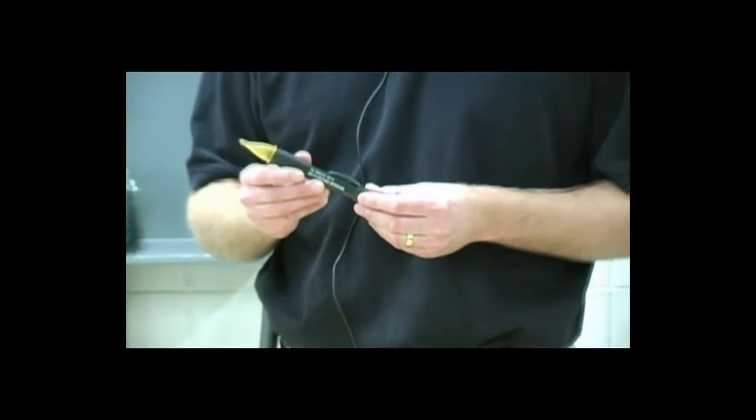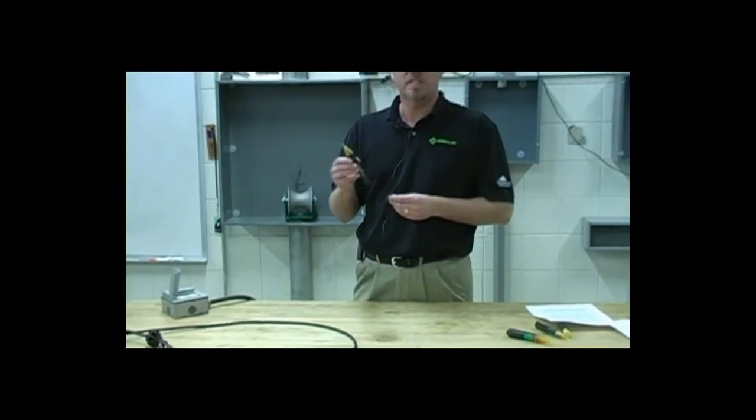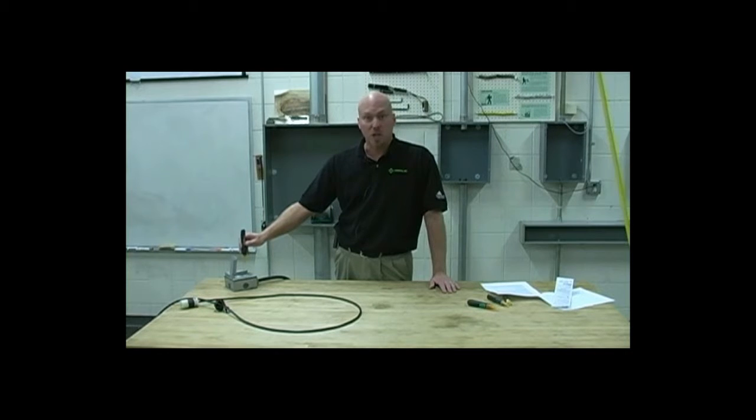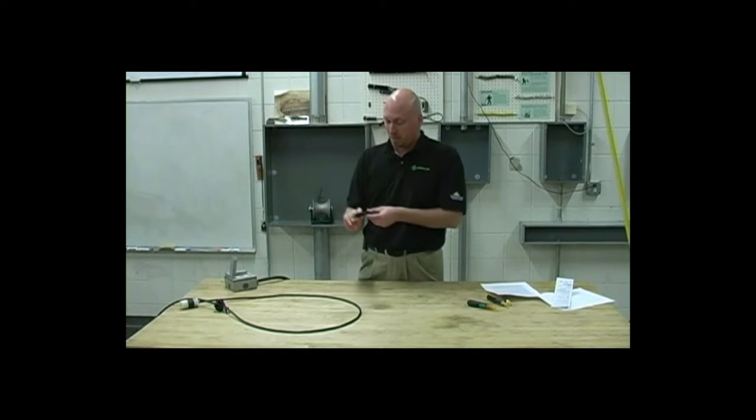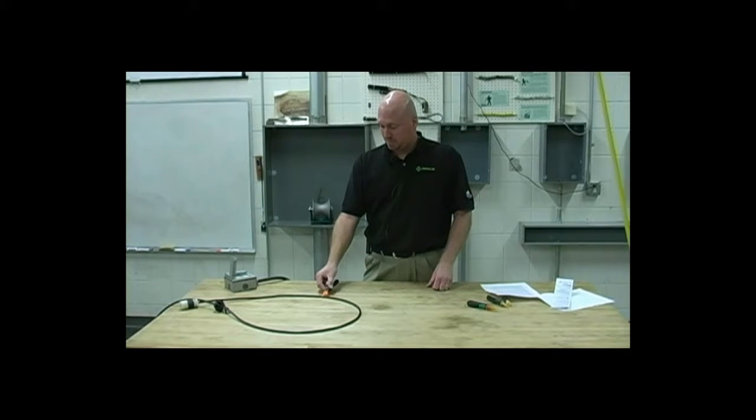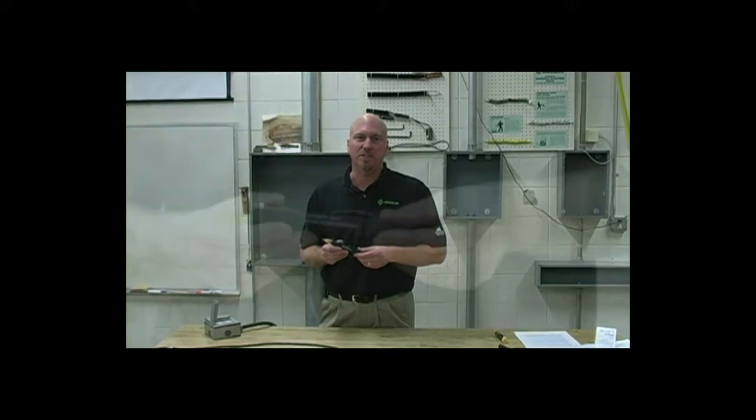Once the GT12 is on, a blinking LED verifies the self-test feature of this tester is enabled. Before testing on an unknown circuit, test on a known live circuit. Place the probe tip near the circuit to be tested. A blinking LED and a tone indicates the presence of AC voltage. The GT12 automatically turns off after about five minutes of not being used.